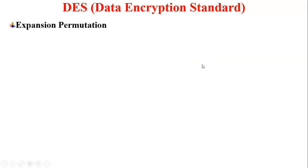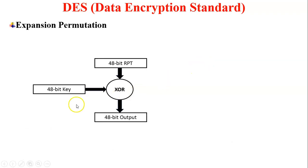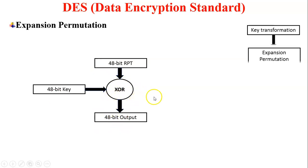Next, XOR is performed. The 48-bit RPT and 48-bit key are both inputs — both are 48 bits — and performing XOR generates a 48-bit output. Key transformation is done and expansion permutation is done.